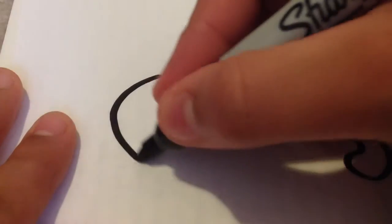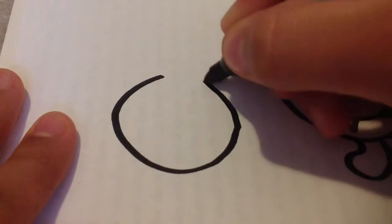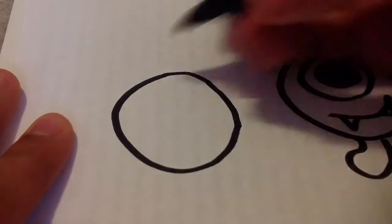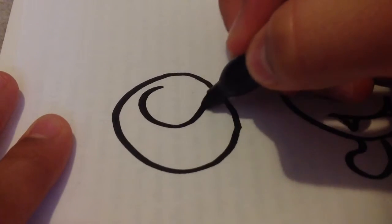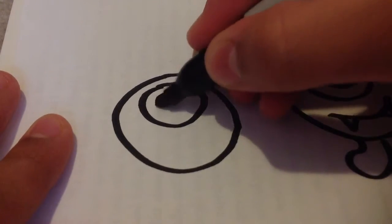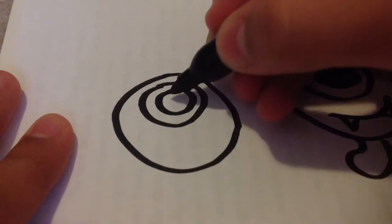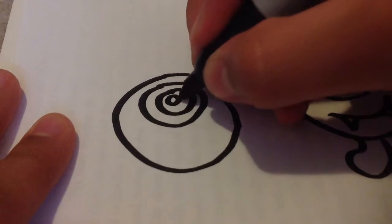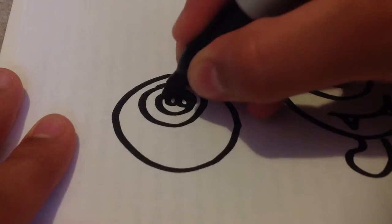So you first want to start off with a big circle and then another circle at the top with another circle like this, and then we're going to draw two circles and fill in the rest.